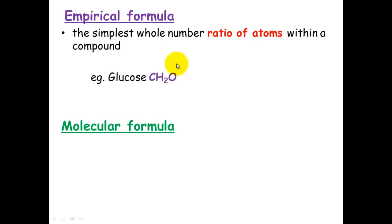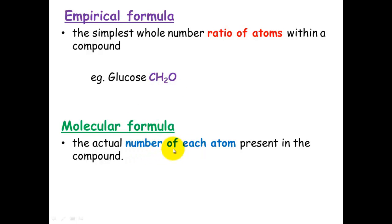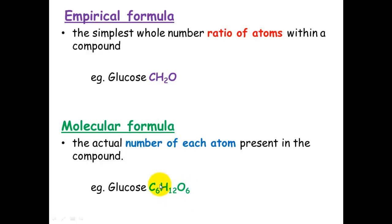For example, glucose would have an empirical formula of CH₂O. This is in comparison to a molecular formula, which is the actual number of each atom present in the compound. Glucose's full molecular formula is C₆H₁₂O₆.